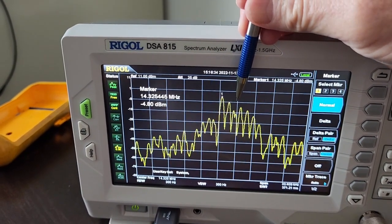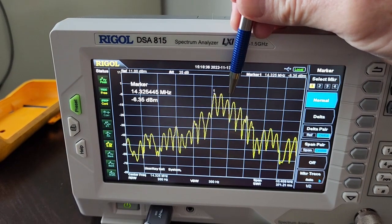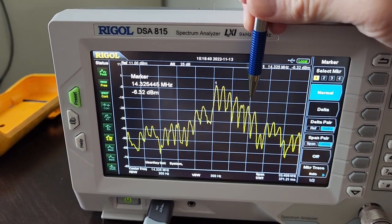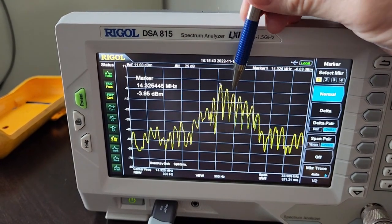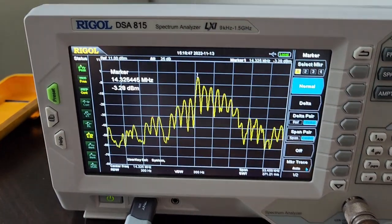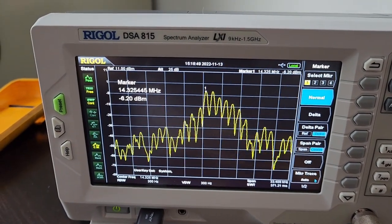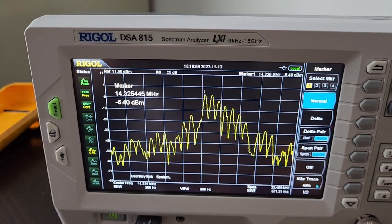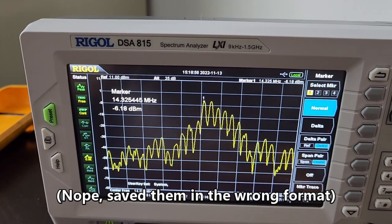This peak is the third-order IMD. The one next to it is fifth-order, seventh-order, ninth-order. Typically, third-order IMD products should be about 30 dB down in a well-designed transmitter, and you can see they're nowhere near that. I'll put up screenshots with Delta cursors on the screen in a minute.